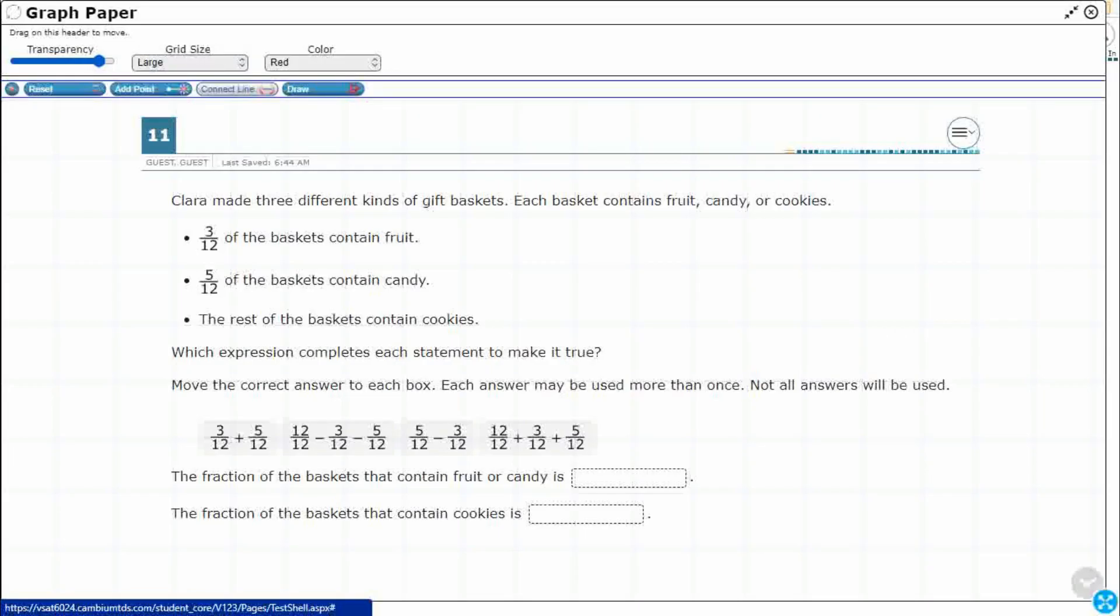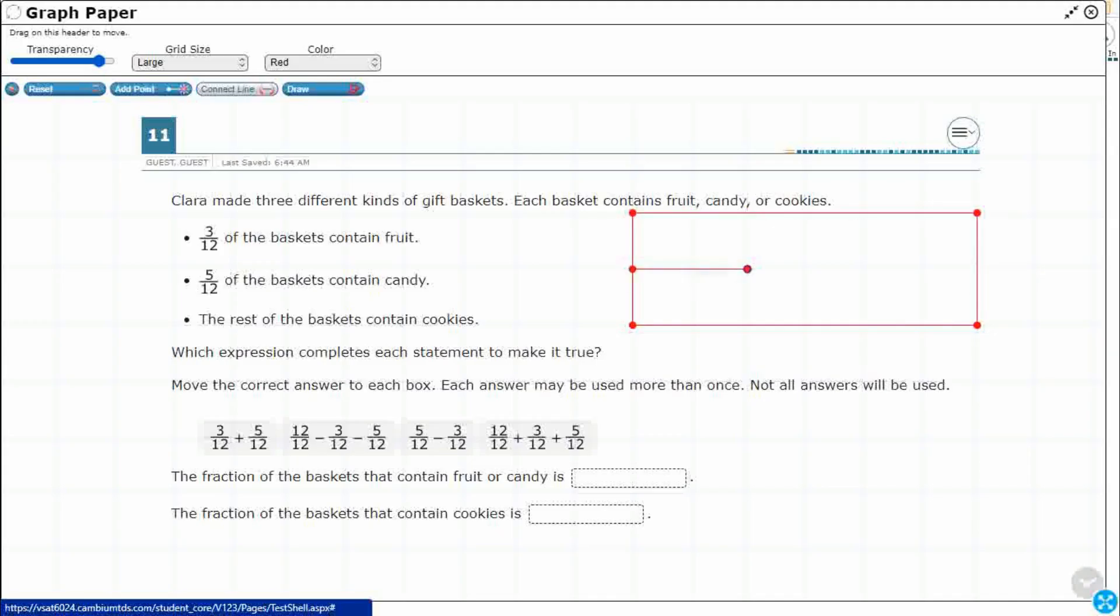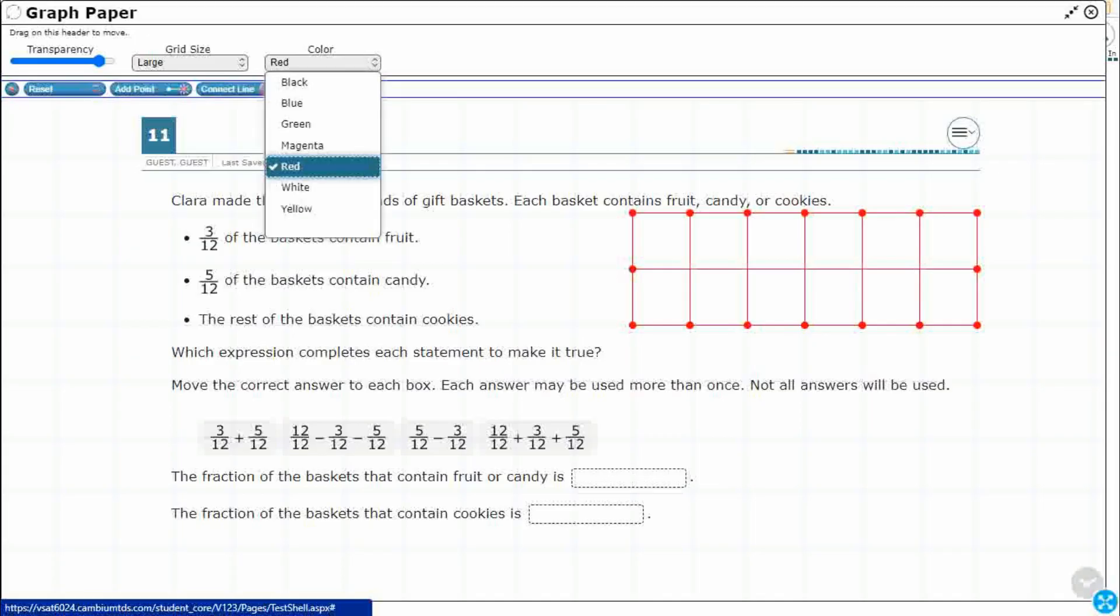I'm going to use the connect line feature and count out one through six. The reason I want to do six is because look at the denominator. The denominator is 12. So if I were to do this, I have a nice visual representation of 12ths, two rows of six. So I'm going to switch to my draw feature.